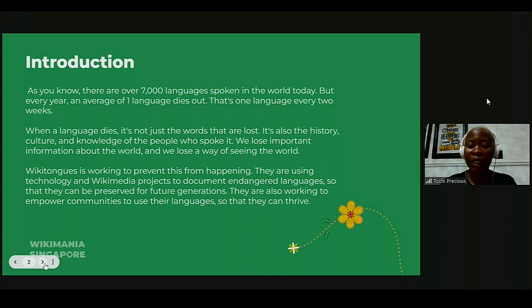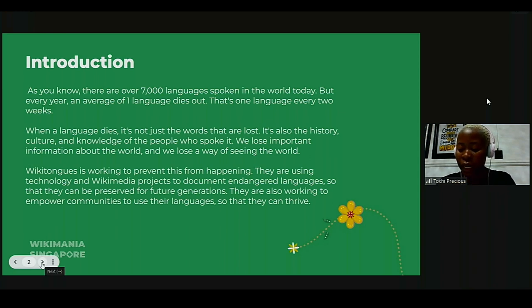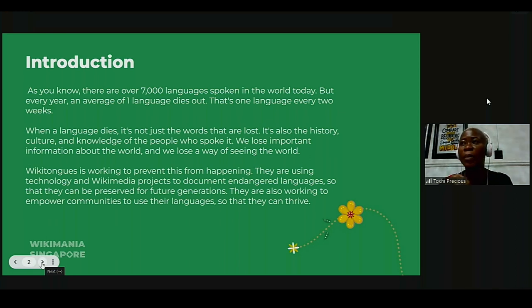We lose important information about the world, and we also lose a way of seeing the world. This is one of the things that Wikithongs is working to prevent. They are using technology and Wikimedia projects to document endangered languages so they can be preserved for future generations. Some languages today have only 20 to 30 living speakers — the Dancer language in Papua New Guinea, for example, has an estimated 20 to 30 living speakers.